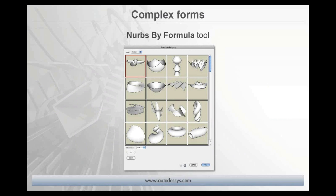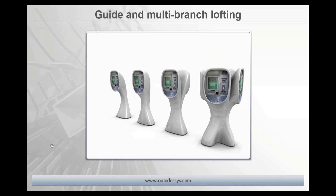You can also build interesting shapes with the new NURBS by Formula tool, which lets you explore shapes through mathematical equations and parameters, or just choose a shape from the pre-existing library and begin manipulating the parameters to create a new form. FormZ offers many other smooth modeling tools such as lofting, guides, and multi-branch lofting, so we'll look at a variety of other ways to create complex shapes beyond just NURBS tools.